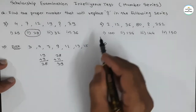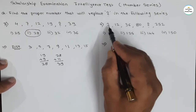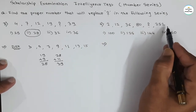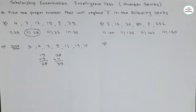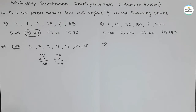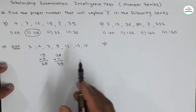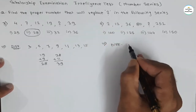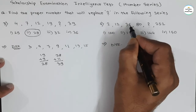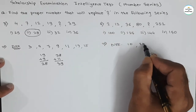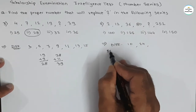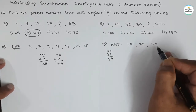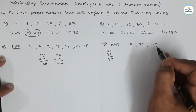Now, the last series of this video. The series is 2, 12, 36, 80, question mark, 252. Here, if we take the differences, the difference method will not work. If we take the differences: 2 to 12 is 10, then 24, then 80 minus 36 is 44. We are not able to find any rhythm, so we must look for another approach.